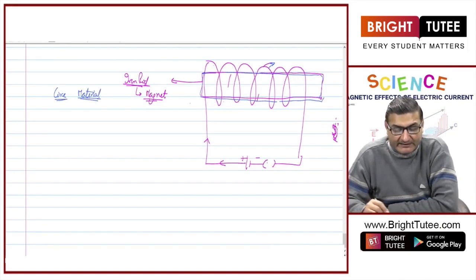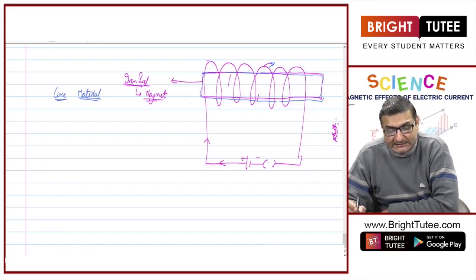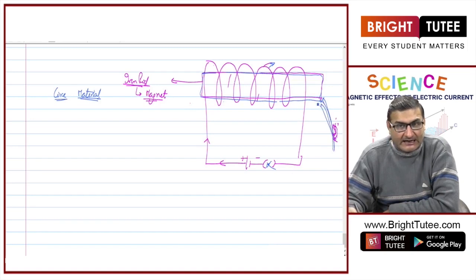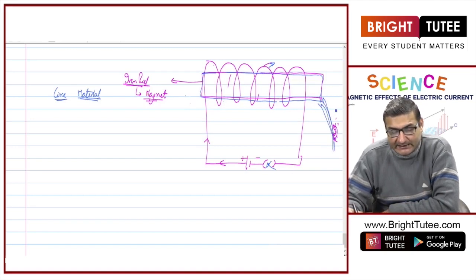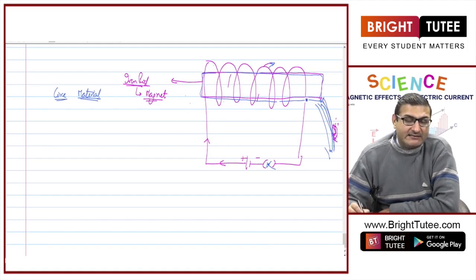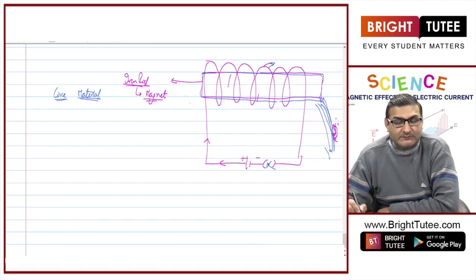In this case, we have taken an iron rod. The important thing is when I switch off the current, then the nails which actually got stuck to this iron rod — because it became a magnet — these nails will once again come down, showing that this rod behaves as a magnet only when the current was switched on.